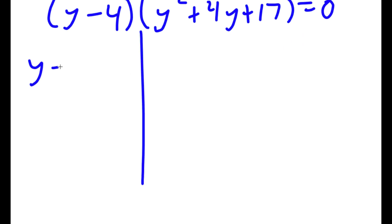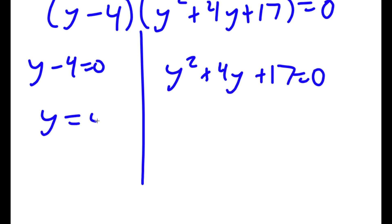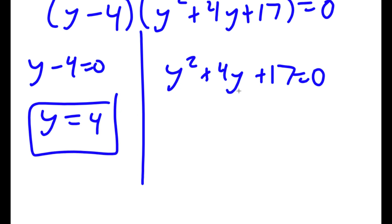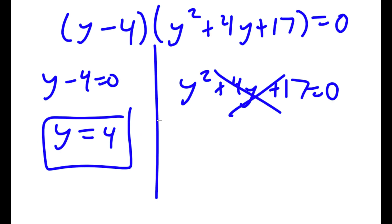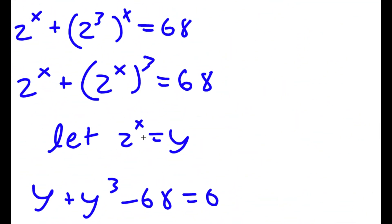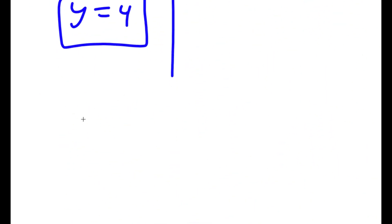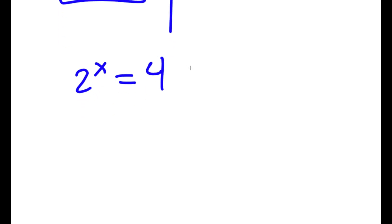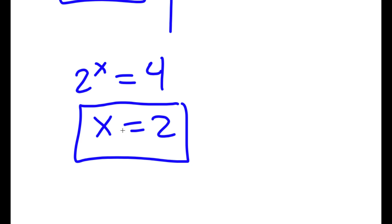This gives me (y minus 4) times (y squared plus 4y plus 17) equals 0, so two equations: y minus 4 equals 0, and y squared plus 4y plus 17 equals 0. For y minus 4 equals 0, y is equal to 4. For y squared plus 4y plus 17 equals 0, using the quadratic formula gives the square root of a negative number, so there is no real solution. Since y equals 4 is the only solution, and 2 to the power of x equals y equals 4, then 2 to the power of x equals 4, so x is equal to 2.